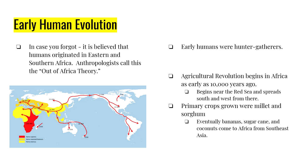The primary crops that were grown were sorghum and millet, and then bananas, sugarcane, and coconuts were all brought into different parts of Africa.